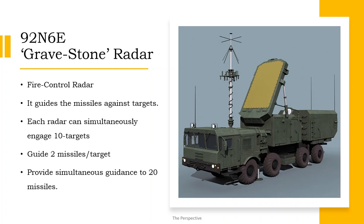The 92N6E Gravestone is a battery or fire unit level fire control radar which directs the missiles towards their targets. It has a range of 400 kilometers, it can track up to 40 targets and simultaneously engage 10 of these targets. It can guide two missiles per target, which gives it the ability to guide 20 missiles simultaneously.